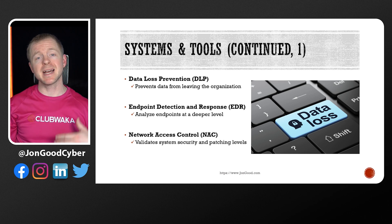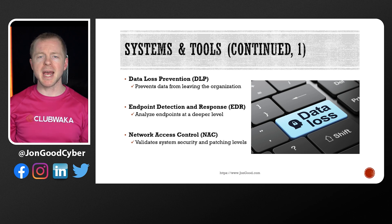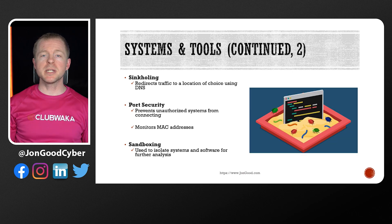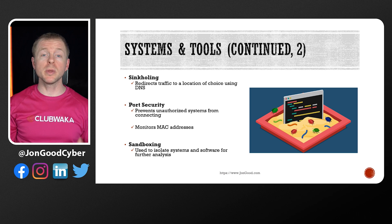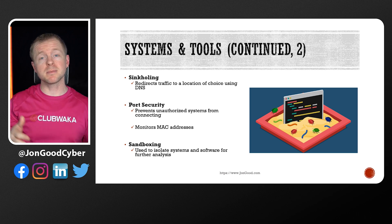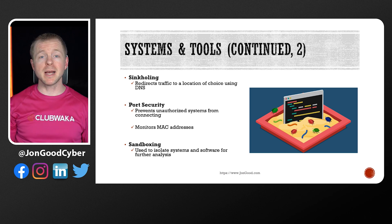forces systems that are trying to connect to our network to meet a certain level of security — so up-to-date antivirus definitions, up-to-date patches, things like that. Sinkholing redirects traffic from the intended destination to a location of your choice through DNS, so traffic doesn't end up at malicious sites. Port security looks at MAC addresses on a switch to make sure that only authorized systems can connect. Sandboxing is a method where we can put systems or software into an isolated area for further analysis, so that if we find something we don't like, we don't have to have our entire network compromised.